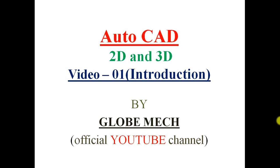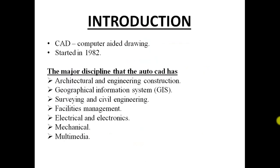What are the main capabilities of AutoCAD? You can draw 2D line drawings, 3D constructions, rendering, part assemblies, and much more. What are the major disciplines that AutoCAD covers? It mainly includes architectural and engineering construction, Geographic Information System (GIS), surveying and civil engineering, facilities management, electrical and electronics, mechanical, multimedia, and more. This is the introduction to AutoCAD, and now we will start the software.